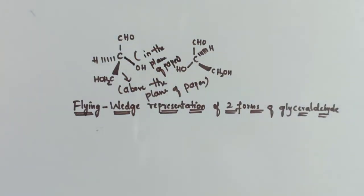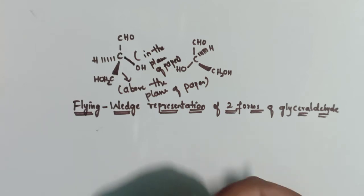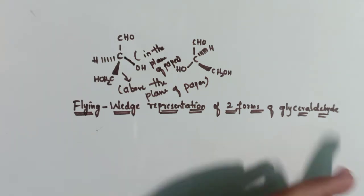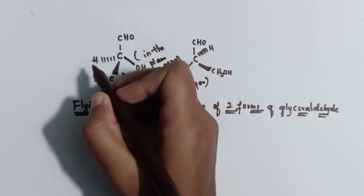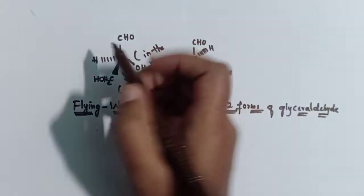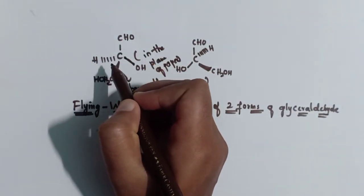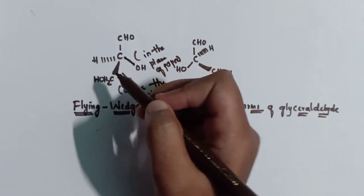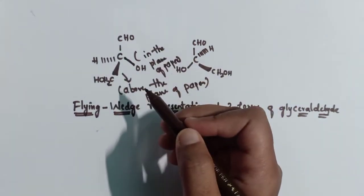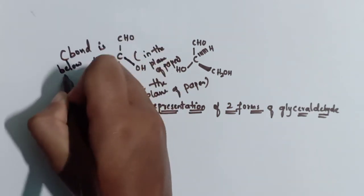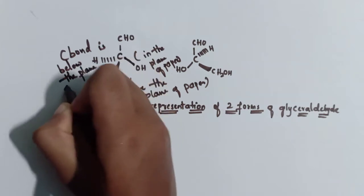The third type of line is the broken wedge, also called dashed lines. Here a bond is below the plane of paper; we can also say the bond is pointing away from the observer. If the bond is projecting below the plane of paper, dashed lines are used to represent it. In other words, this bond is pointing away from the observer and is below the plane of paper.